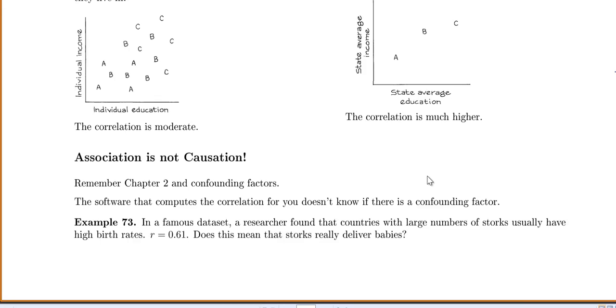So example 16. In a famous data set, a researcher found that countries with a large number of storks usually have high birth rates with a correlation of 0.61. So does this mean that storks really deliver babies? Obviously not.